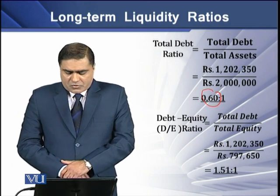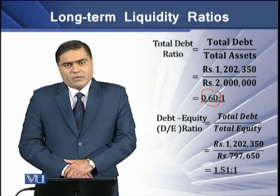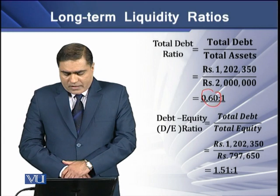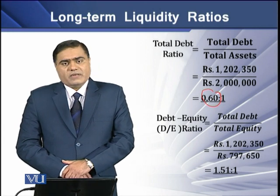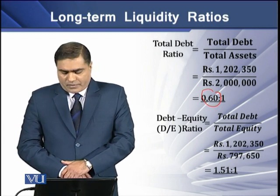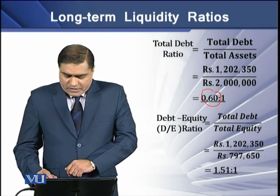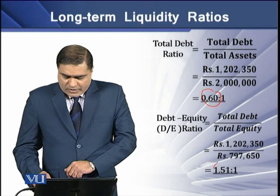Using a total debt of 1.2 million and total equity of 0.797 million, we get a ratio of 1.51.